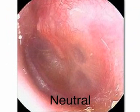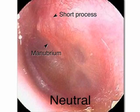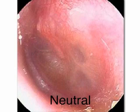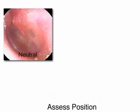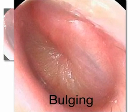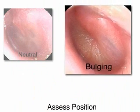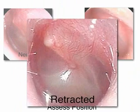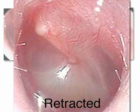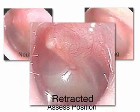Assess the position of the tympanic membrane by visualizing the manubrium and short process of the malleus. When the tympanic membrane is in the neutral position, the manubrium and short process are clearly visible. When the tympanic membrane is bulging, the short process is not visible and the tympanic membrane appears convex. When the tympanic membrane is retracted, the manubrium appears foreshortened and the short process appears prominent.